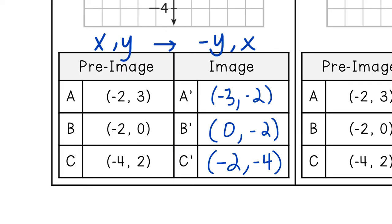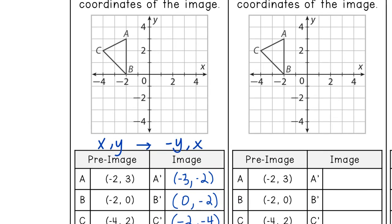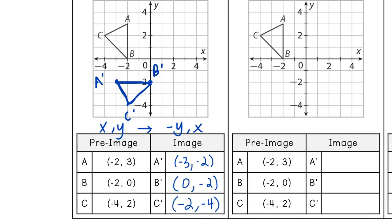So now that I have all three points, I want to graph it in the graph above. So A prime, (-3, -2). B prime is (0, -2). And C prime is (-2, -4). Then we connect our points. And there is our triangle. Notice how you can see it turning. For example, here's A and then here's A prime. See how you can tell that it's a 90 degree turn and it's to the left, counterclockwise.